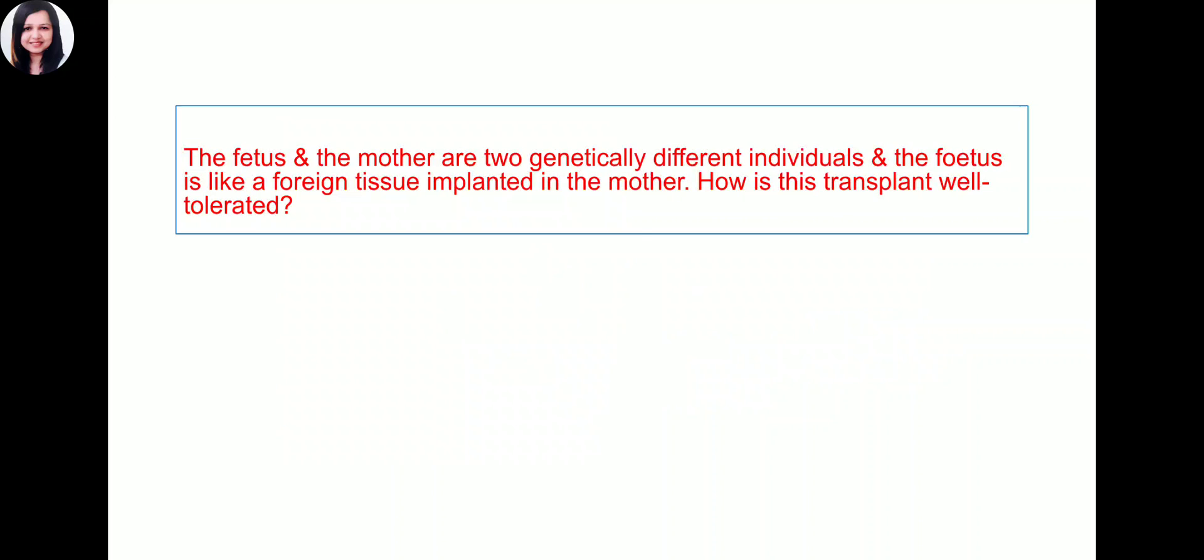The fetus and the mother are two genetically different individuals, and the fetus is like a foreign tissue implanted in the mother. How is this transplant well tolerated? Why is the mother's body not rejecting the fetus? The antibodies against fetal proteins do not develop because the fetal cells do not express MHC 1 and 2. Major histocompatibility 1 and 2 antigens are not expressed, so there will not be any immune reaction.